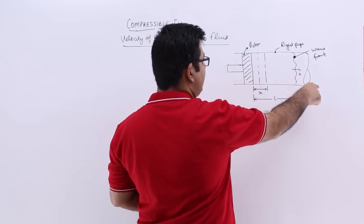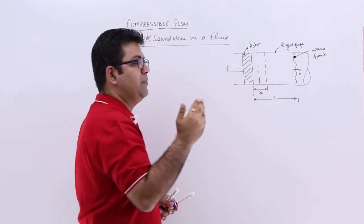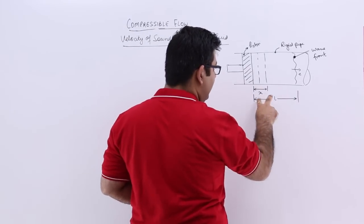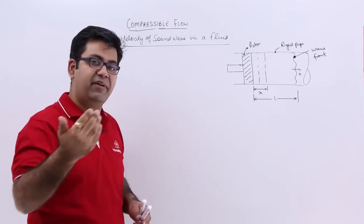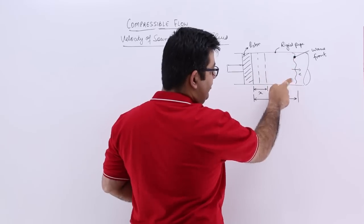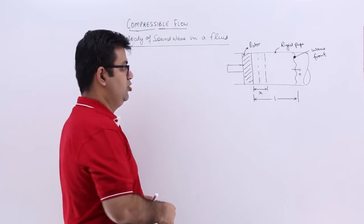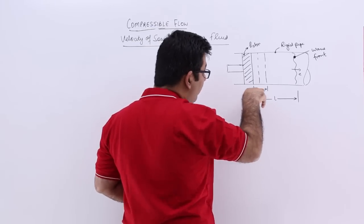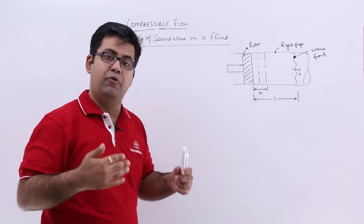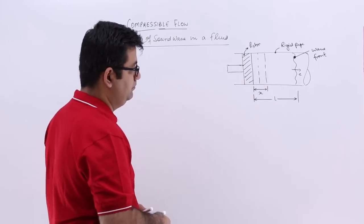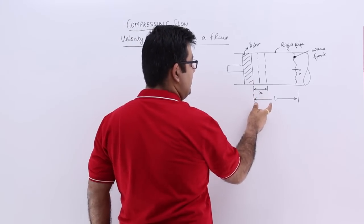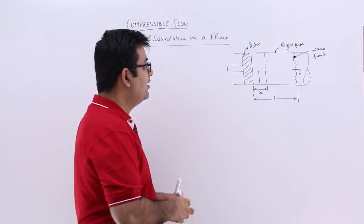If you look at this, there is a rigid pipe in which you have a piston. Initially the piston is at rest. When you give the piston a slight movement towards the right by a distance x, a pressure wave is generated which moves ahead at a velocity of sound. This is the wave front moving at the velocity of sound, and the pressure wave moves by a distance capital L.